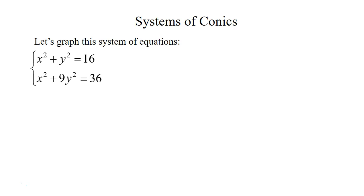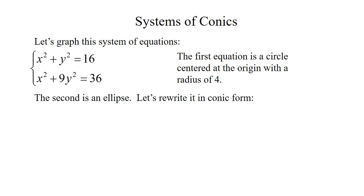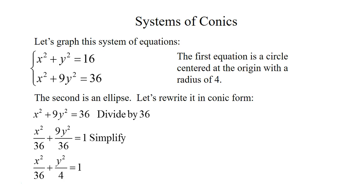Looking at the first equation we have a circle that's centered at the origin with a radius length of 4. The second one is an ellipse and we're going to rewrite it in conic form so we can graph it. So let's first divide everything by 36.